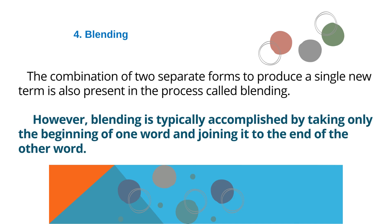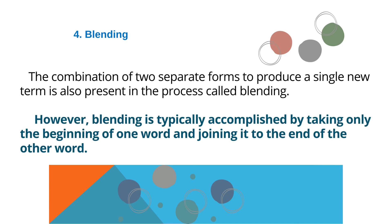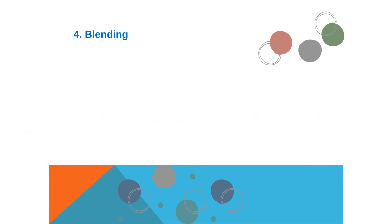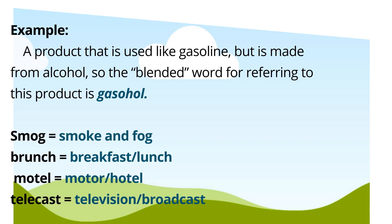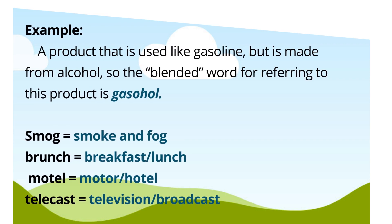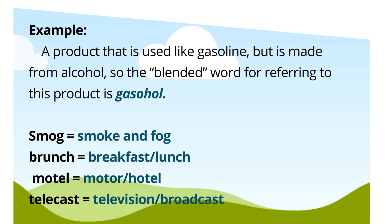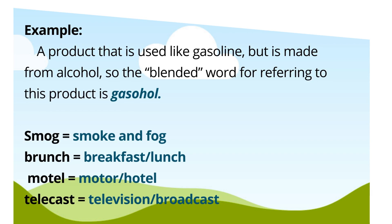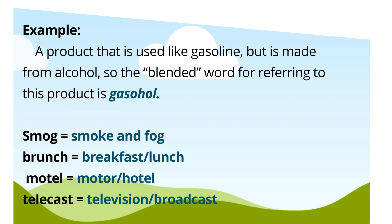Blending. The combination of two separate forms to produce a single new term is also present in the process called blending. However, blending is typically accomplished by taking only the beginning of one word and joining it to the end of the other word. Example: a product used like gasoline but made from alcohol — the blended word is gasohol. Smog: smoke and fog. Brunch: breakfast and lunch. Motel: motor hotel. Telecast: television broadcast.